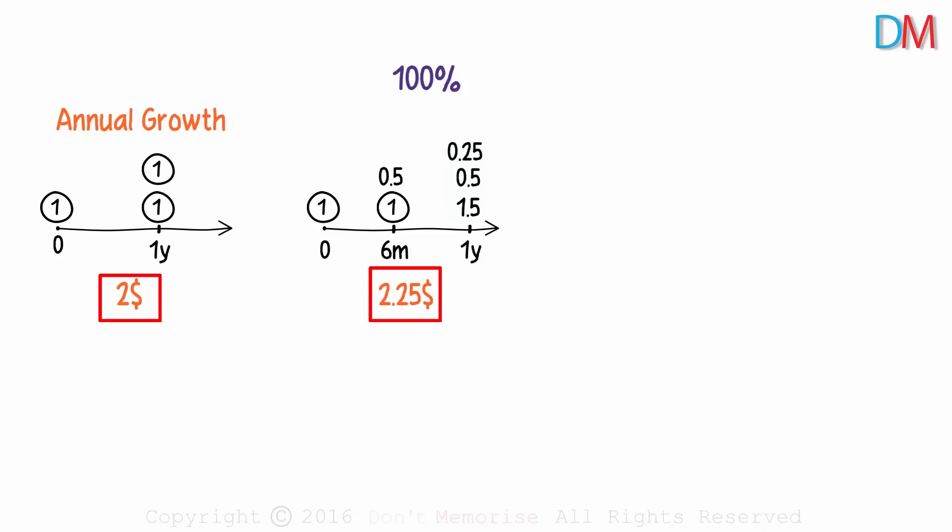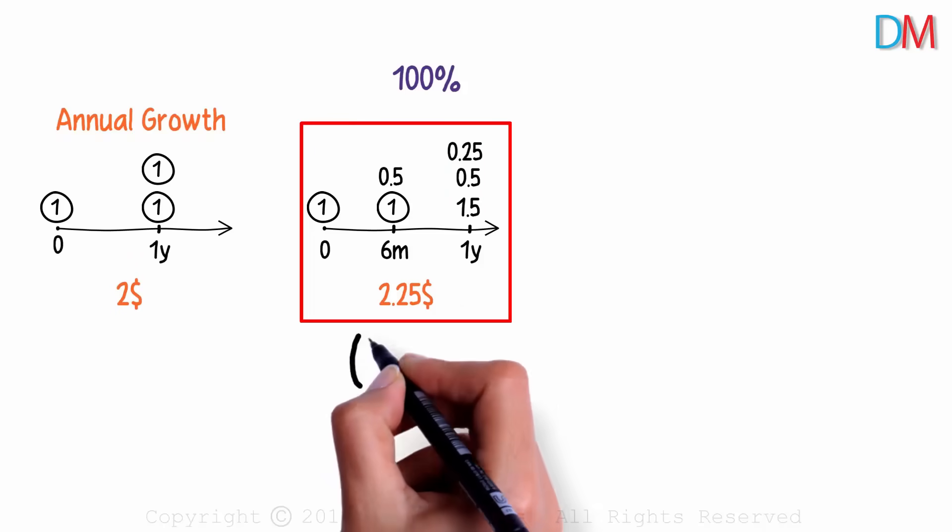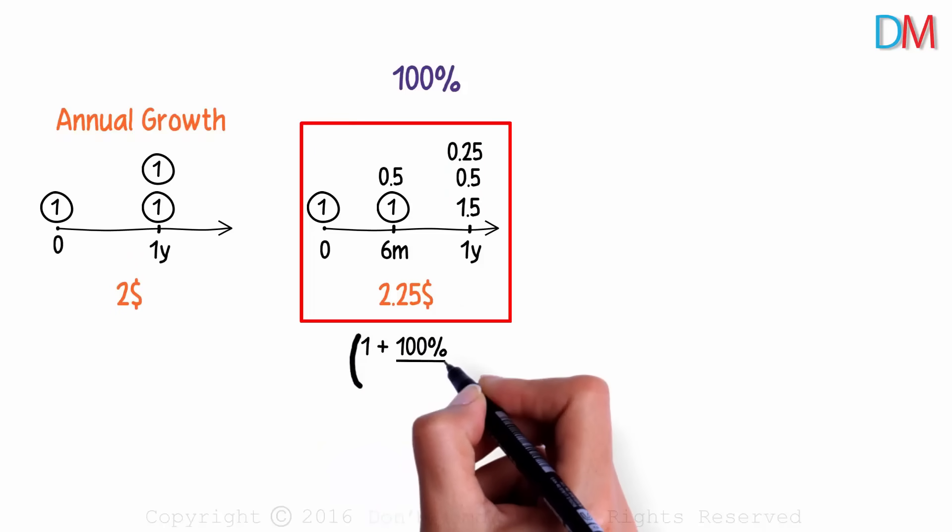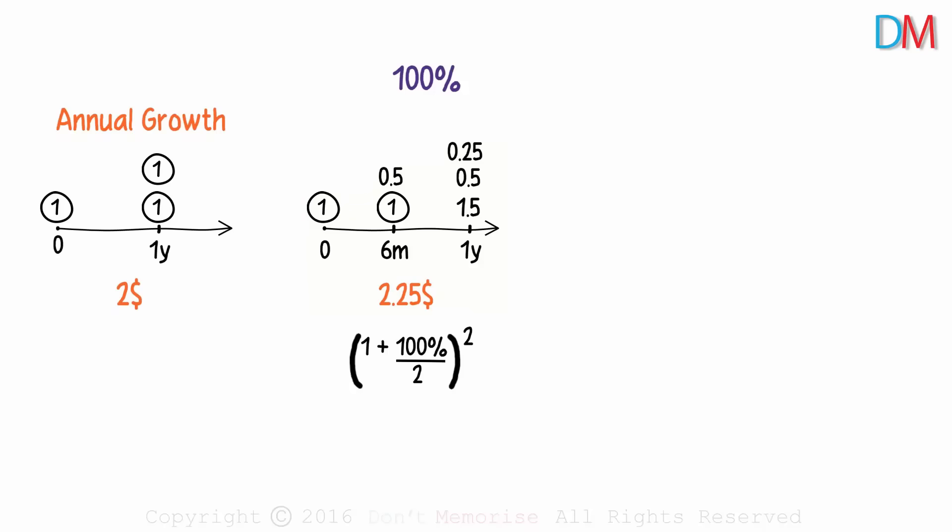This is better than doubling. If we want to understand this using a formula, it would be (1 + 100%/2)^2. We had half the growth rate over two time periods. This is also referred to as semi-annual growth. Let's push ourselves further.